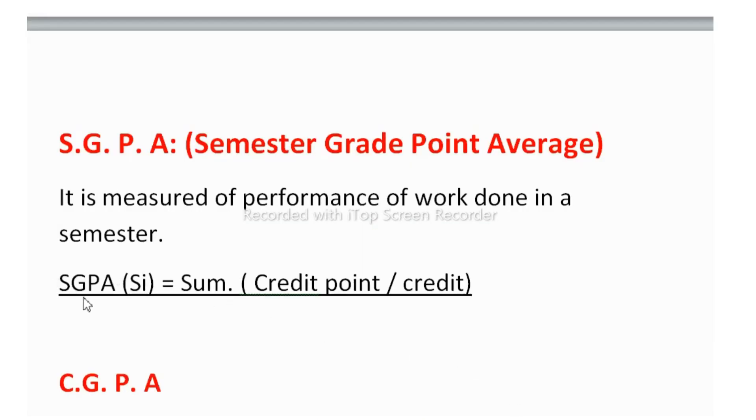Here I have shown the formula. To calculate SGPA, what you have to do: credit point, whatever credit point is there, just now we have calculated. This is the credit point. 224 divided by credit 25 we were getting. So that will be equals to 8.96. So this is the answer. In this way you will get your SGPA. So students I hope it would be helpful for you.